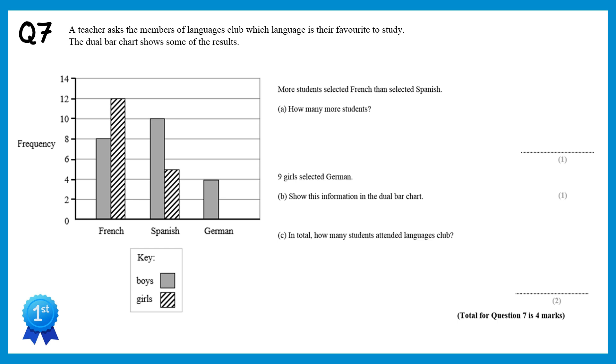We're told that more students selected French than selected Spanish, and we need to find out how many more. So if we add up the students for French, looking at the first two bars, we have 8 and 12, so we do 8 add 12, which is 20, and the Spanish bars, we have 10 and 5, so 10 add 5 is 15. So how many more students were there? We just do 20 take away 15, which gives you 5.